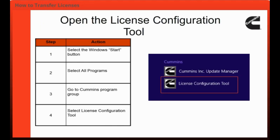In order to transfer your Insight licenses to another computer, you will first need to select the Windows Start button, then select All Programs. Once All Programs is selected, navigate to the Cummins Program group and select License Configuration Tool.